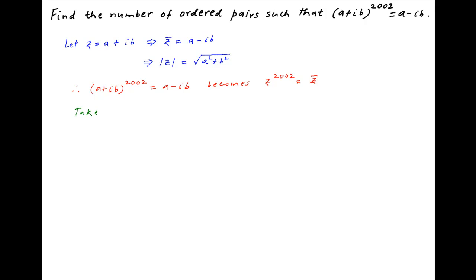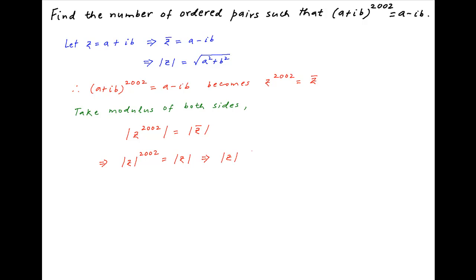Take the absolute value of both sides. We get the absolute value of z raised to the power 2002 is equal to the absolute value of the conjugate of z. Now, the absolute value of the conjugate of z is equal to the absolute value of z. And therefore, this equation can be written as the absolute value of z multiplied by, in brackets, the absolute value of z raised to the power 2001 minus 1, is equal to 0.